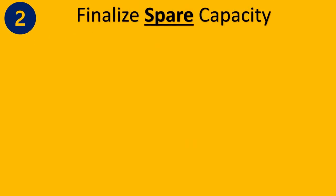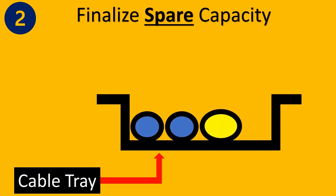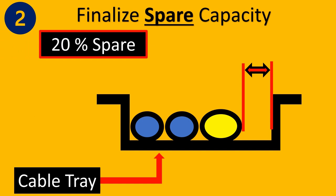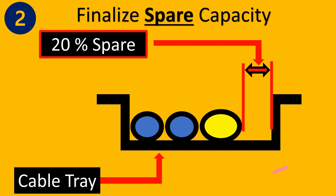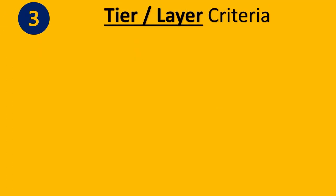Step two is finalizing the spare capacity. No matter how well you size your cable tray, some calculations might have been missed or space may be needed for future expansion. You need to keep a certain portion empty — this is called spare capacity, which is usually 20% or 30%, depending on whether it is a FEED or detail engineering project and what the client requirement is.